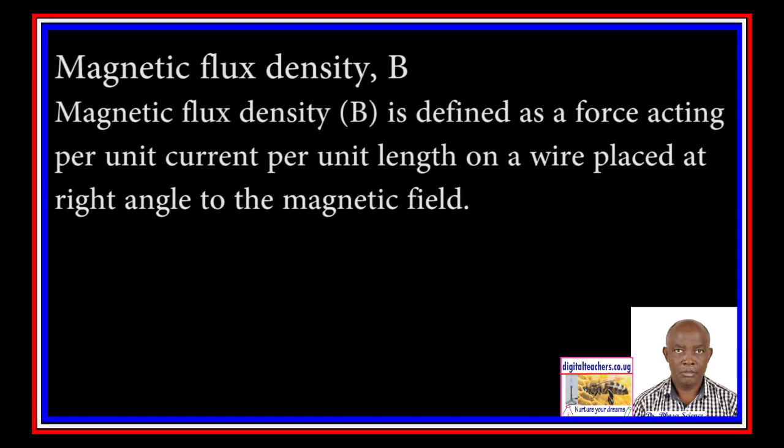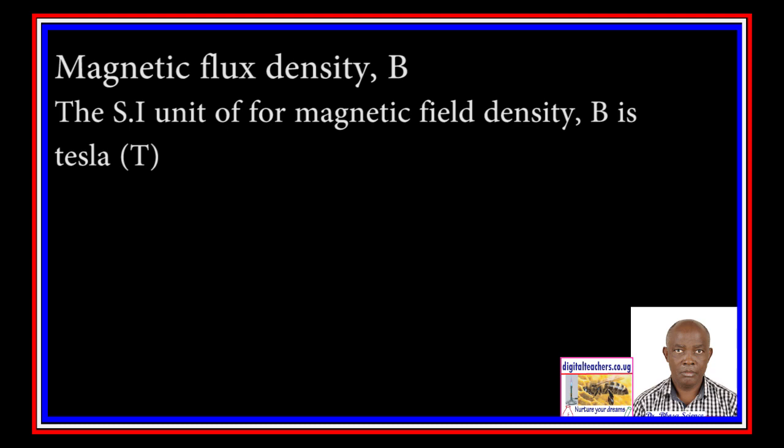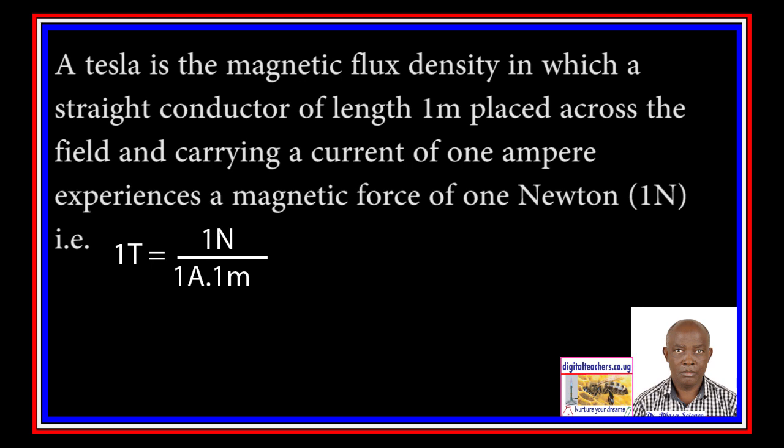Magnetic Flux Density B is defined as the force acting per unit current, per unit length, on a wire placed at right angles to the magnetic field. The standard unit for Magnetic Flux Density B is Tesla (T). A Tesla is the magnetic flux density in which a straight conductor of length 1 meter, placed across the field and carrying a current of 1 ampere, experiences a magnetic force of 1 newton.